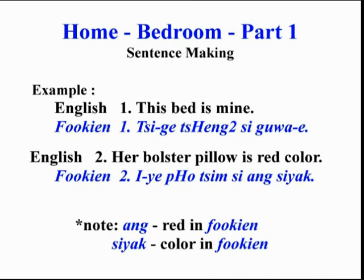Sentence Making. Example. English Number 1: This bed is mine. Fukyan Number 1: Chige cheng shigwai. English Number 2: Her bolster pillow is red color. Fukyan Number 2: Ie po jim, shi ang siak.